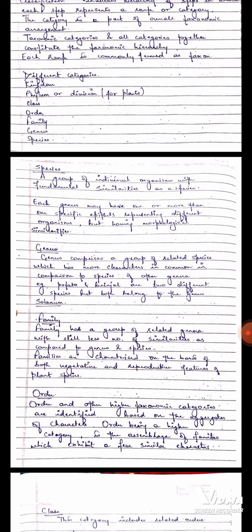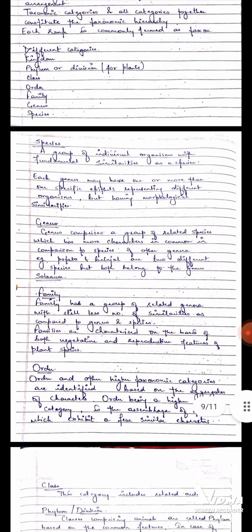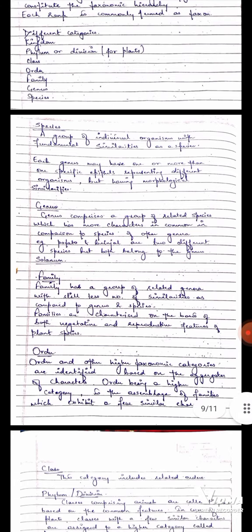Then we will come to genus. Genus comprises a group of related species which has more characters in common in comparison to species of other genera. Example potato and brinjal are two different species but both belong to the genus Solanum. Genus has a group of related species in which characteristics are common even though shape and size may be different. But common comparative characters are same. Like for example potato and brinjal. They are different species but their genus is the same that is Solanum.